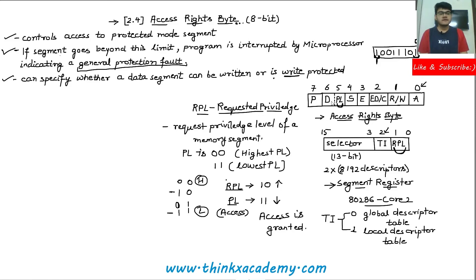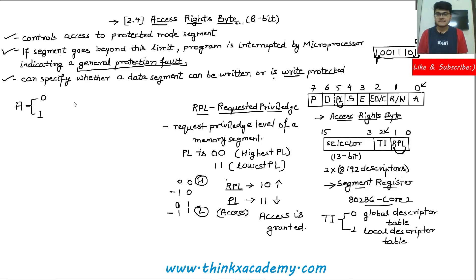Now let's study briefly the use of each bit inside the access rights byte. The first one is A. A can hold two values: zero or one. When A equals zero, the segment is not accessed. When A equals one, the segment can be accessed.